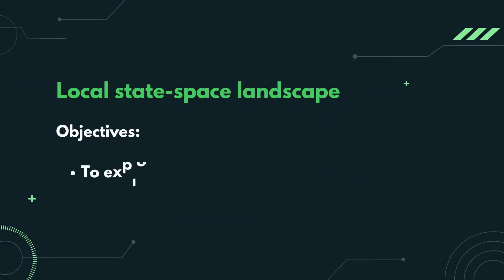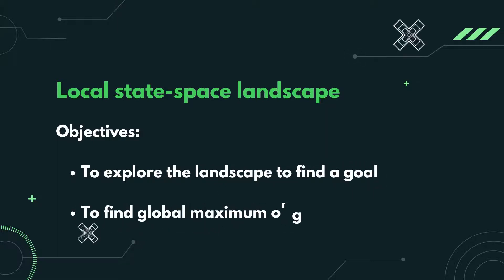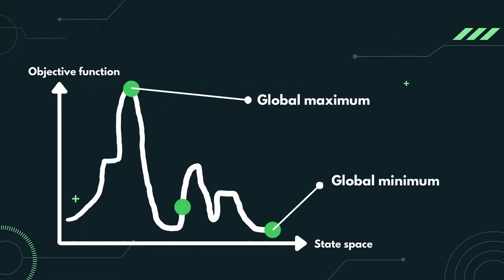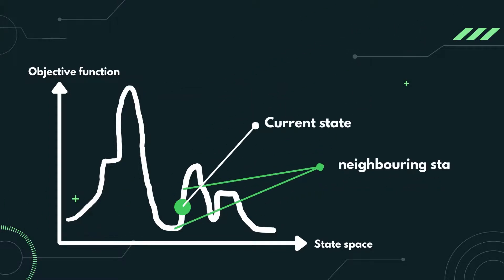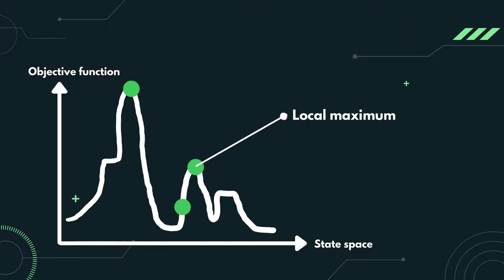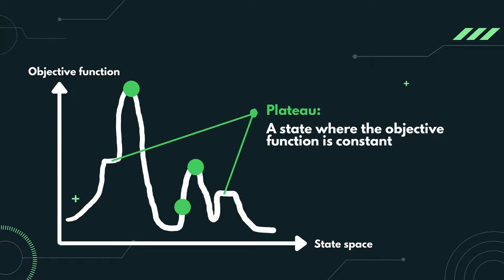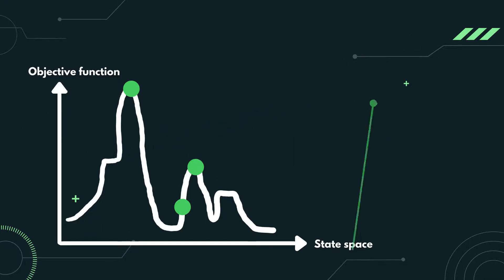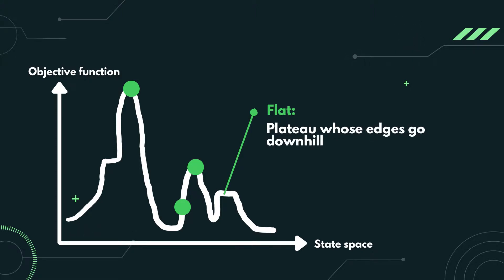The objectives of a local state space landscape are to explore the landscape to find a goal — to find the global maximum or global minimum. A global maximum is the highest point in the landscape, while the global minimum is the lowest. The candidate solution will move based on neighboring states. Since the global maximum may be far away, it will instead find the local maximum, which is the highest point among the nearby states. A plateau is a state where the objective function is constant. A shoulder is a plateau that has an uphill edge. A flat is a plateau whose edges go downhill.